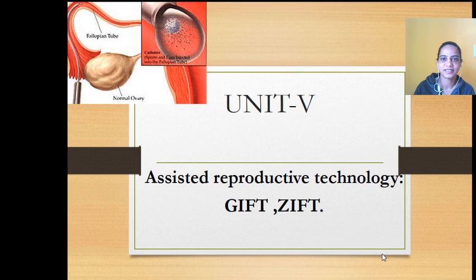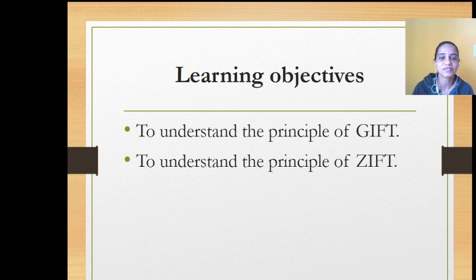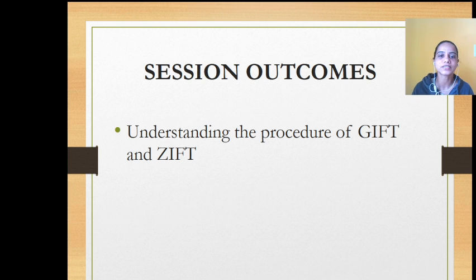Hello everyone. We are almost at the end of this unit and today's topic is a continuation of assisted reproductive technology. In this we will see GIFT and ZIFT. In the previous class we covered artificial insemination and intra-uterine insemination. The learning objectives are to understand the principle and procedure of both ZIFT and GIFT, including their drawbacks and advantages.